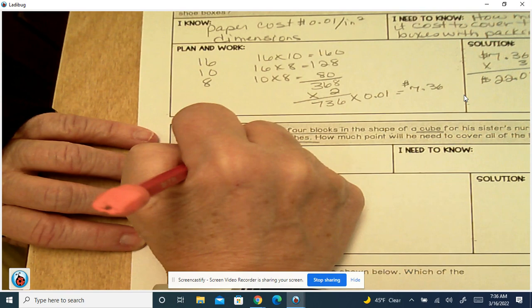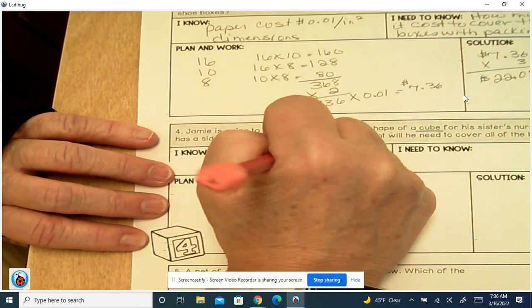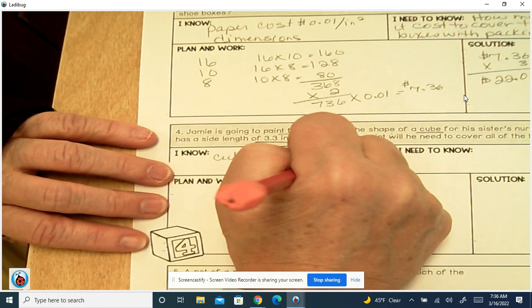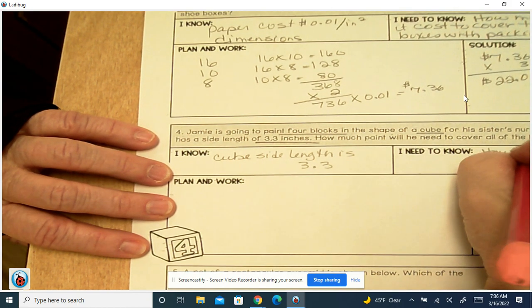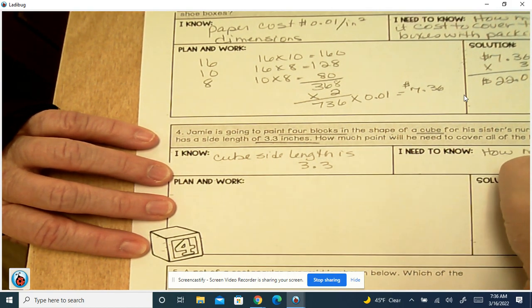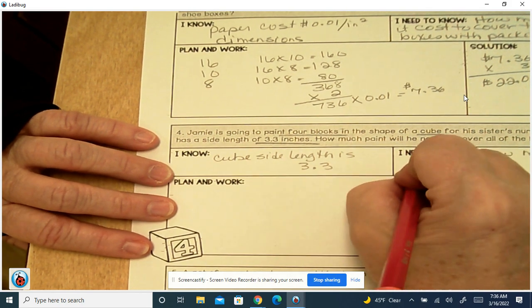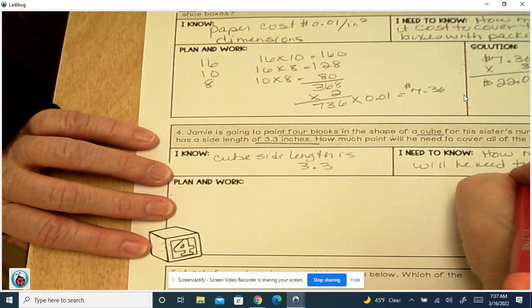So the cube side length is 3.3. What we want to know is how much paint will he need to cover four blocks?